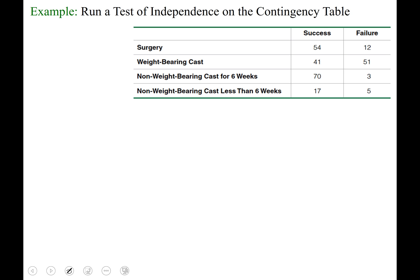Okay, so let's try this example. We are asked to run a test of independence on this contingency table. We set up our null and alternate hypothesis with two capital H's, sub-nought, sub-1, independent, and dependent.